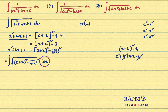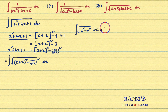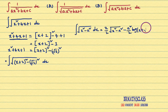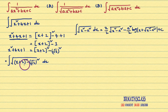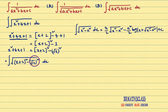If you observe this integral, it is of the form ∫√(x² - a²) dx. We learned this formula in previous classes. That formula is: x/2 · √(x² - a²) - a²/2 · log|x + √(x² - a²)| + c. This problem is of this form. We can write the answer directly by applying this formula. In place of x, here x + 2 is there, and in place of a, here √3 is there.